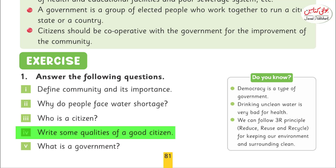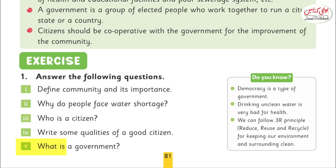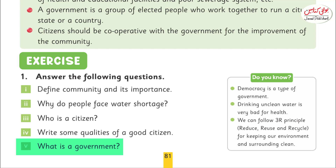Write some qualities of a good citizen. A good citizen is trustworthy. A good citizen is helpful. A good citizen is fair in his dealings. A good citizen pays taxes regularly. What is a government? A government is a group of elected people that works together to run a country.